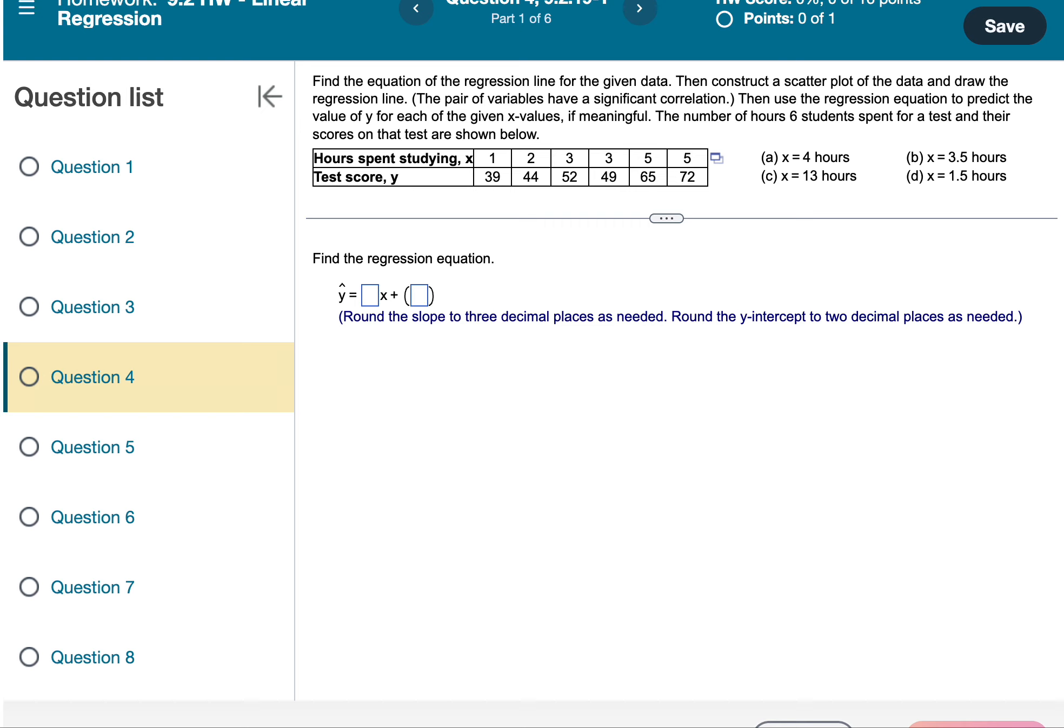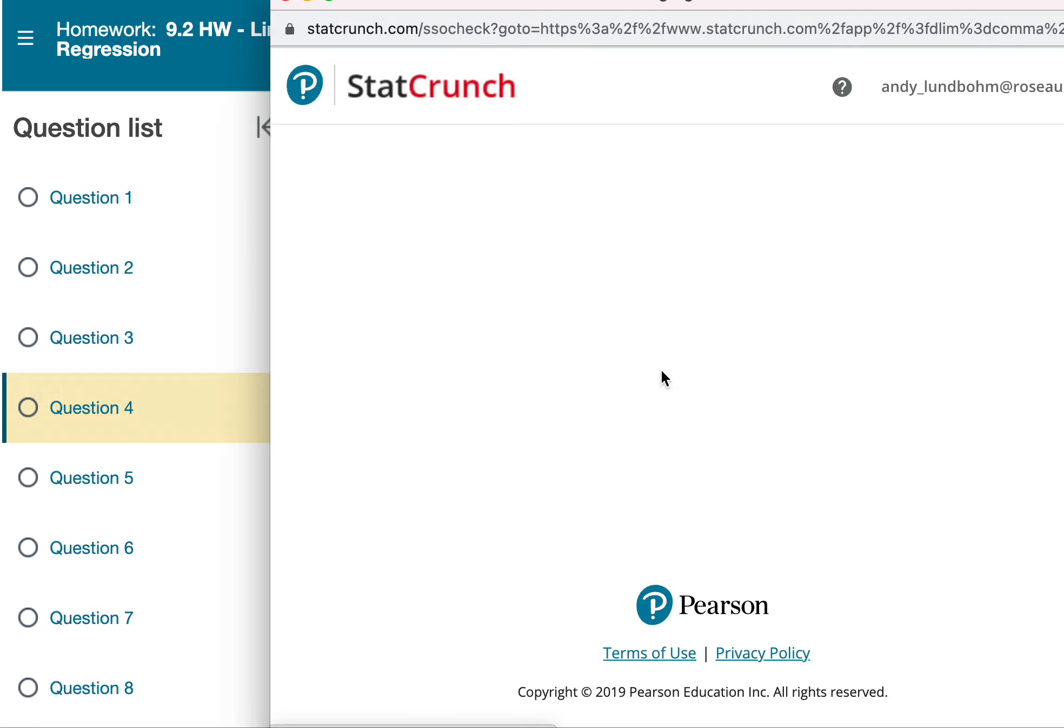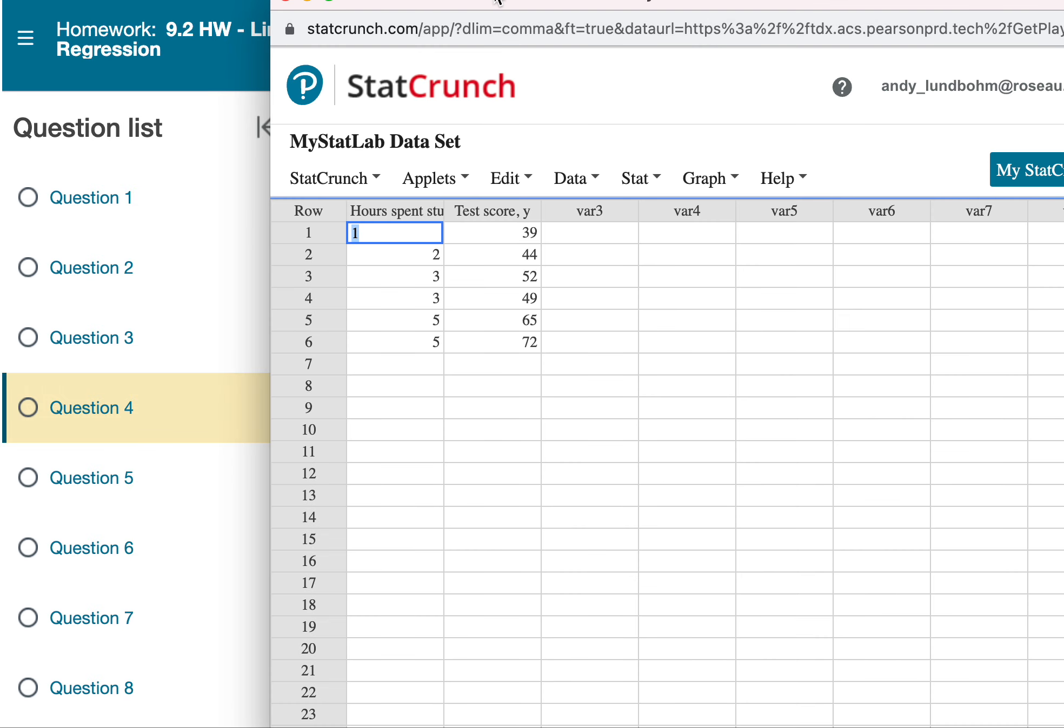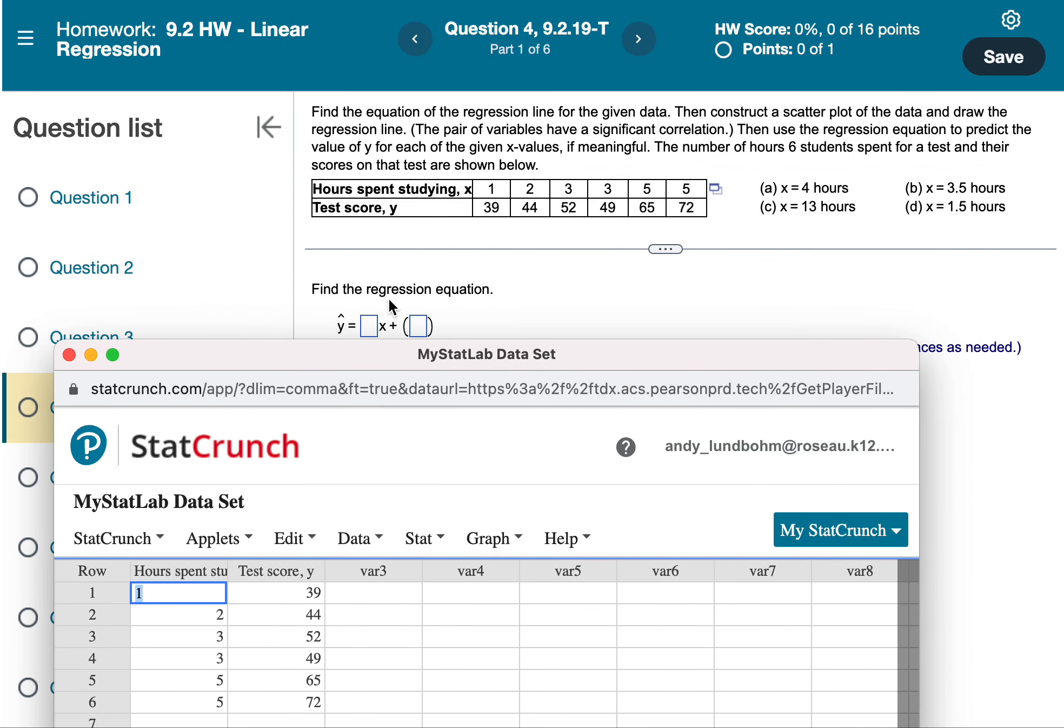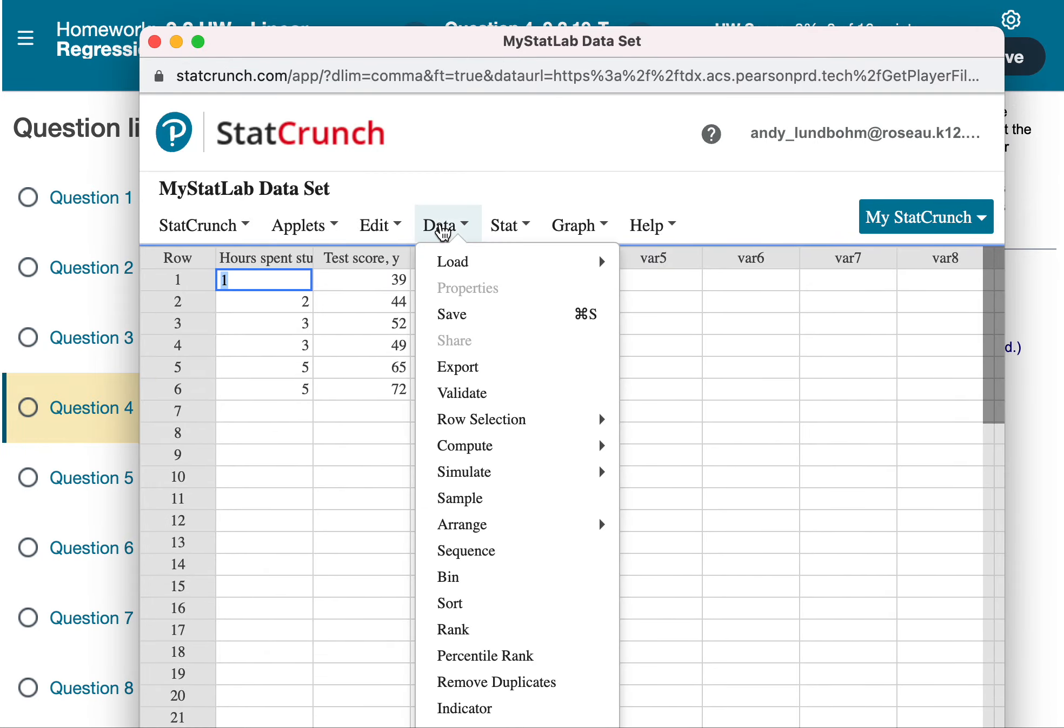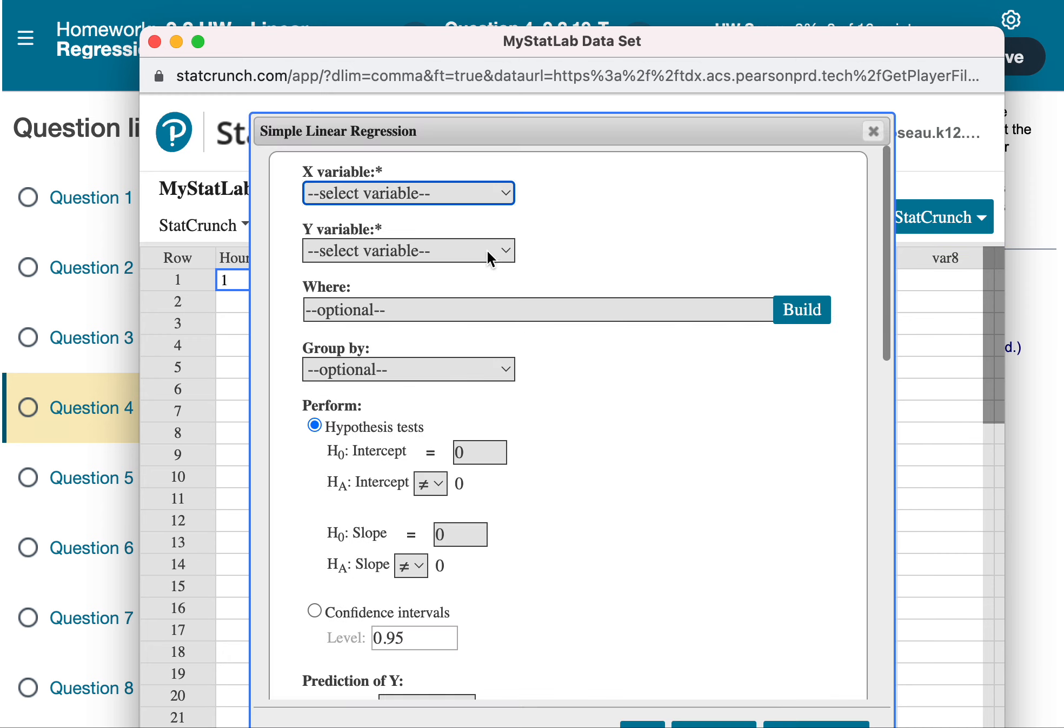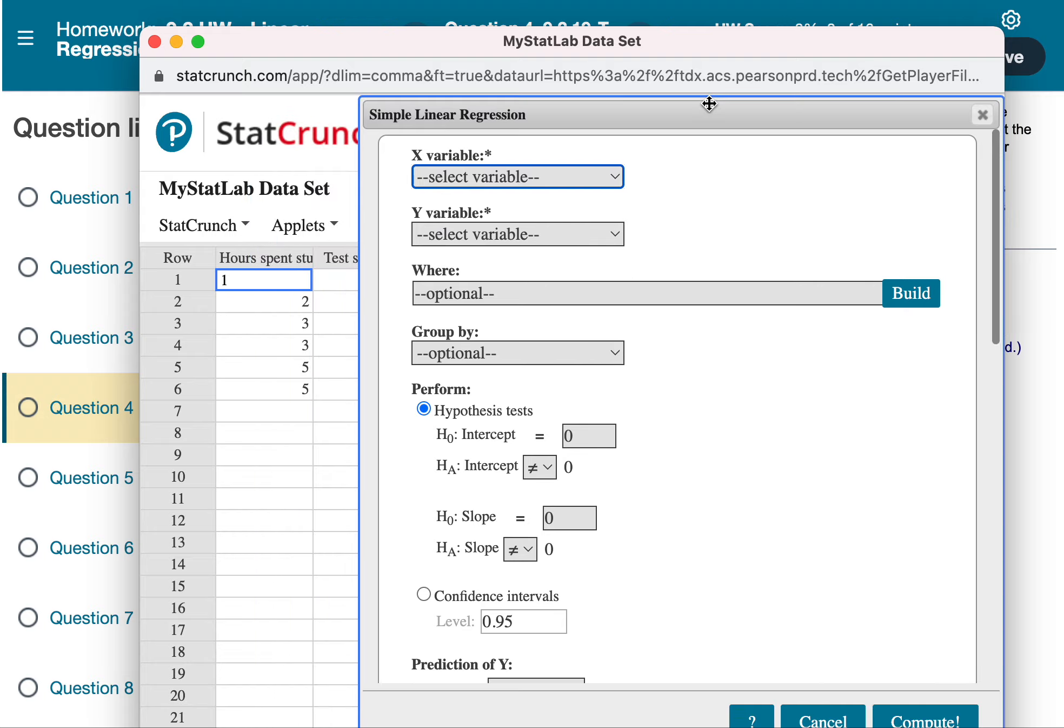This is number four online. Okay, so hit StatCrunch. This is how to do this problem with StatCrunch. Hit here, hit stat, StatCrunch brings up the numbers. We just have a regular linear regression, so once I'm in here I can go stat, regression, simple linear.